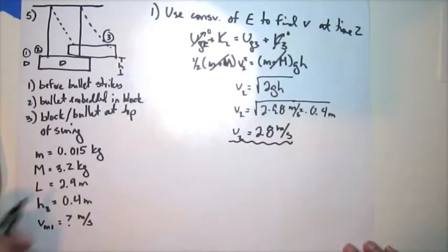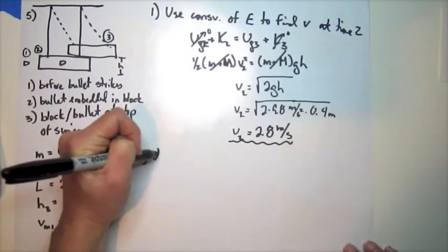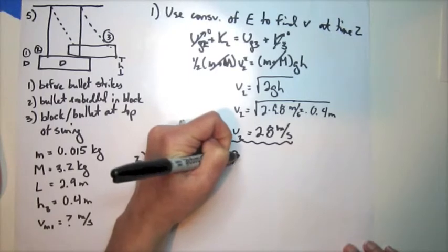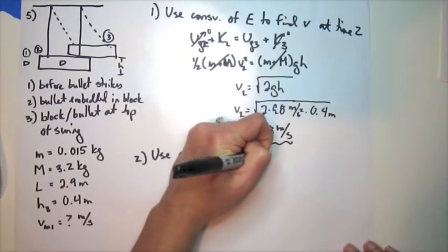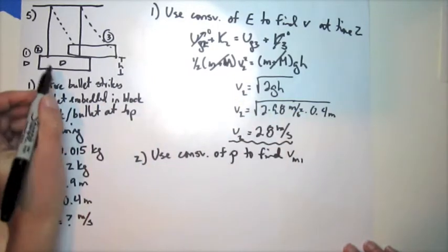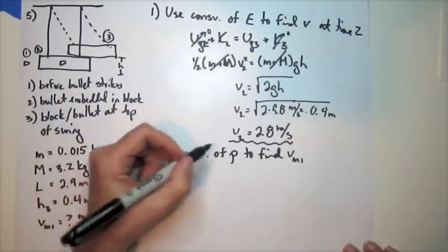Okay, so now this becomes a conservation of momentum problem. So the total momentum at time 1 equals the total momentum at time 2.